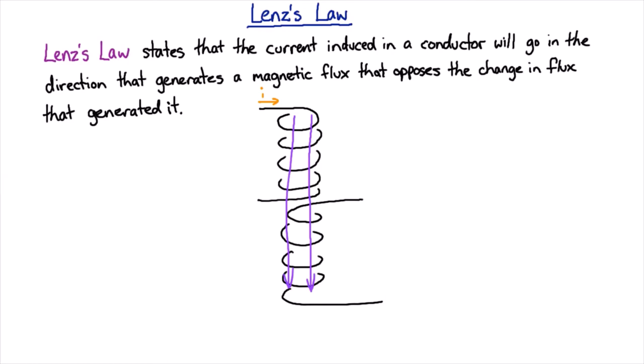However the key point is when we change the current we're going to change the magnetic field. When we change the magnetic field in the first coil we change the magnetic field in the second coil and that changes the flux flowing through it. And that's going to induce some kind of current in the second coil and the question is which way should it go?